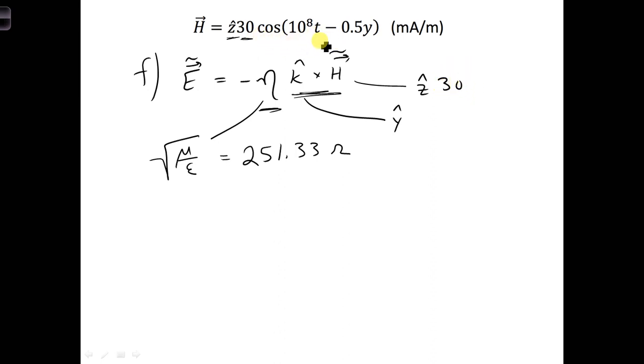Now for the rest of this, cosine, we're going to have to use Euler's identity and write it in terms of an exponential, and then we cancel out or factor out the e to the j omega t terms. So this term is going to be factored out and we wind up with e to the minus j 0.5y.